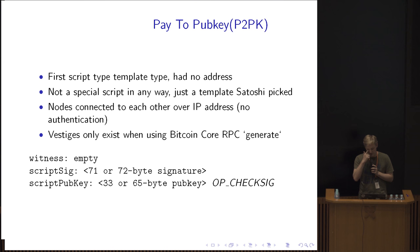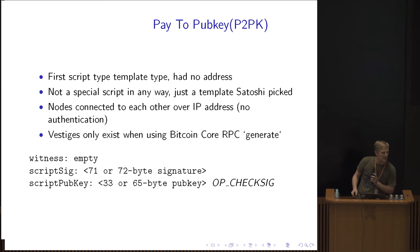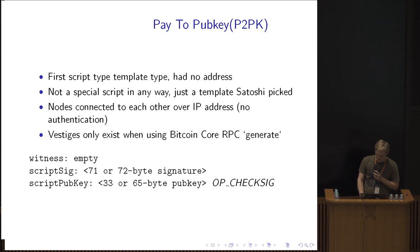The only vestiges of it in the Bitcoin Core codebase are when you call generate in regtest — it puts the output directly into one of these scripts, not addresses. You have 33 or 65 byte pubkeys and checksig, and the signature is DER encoded.